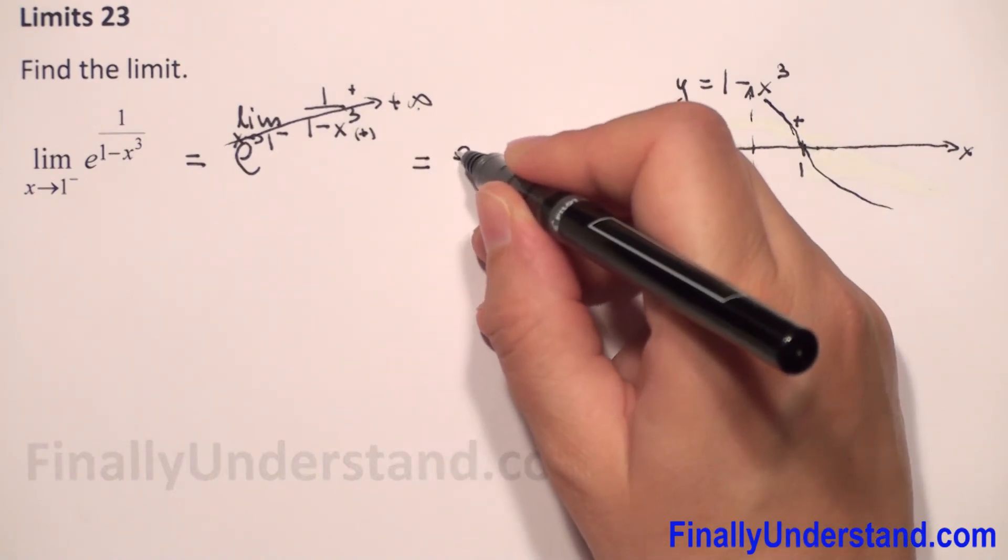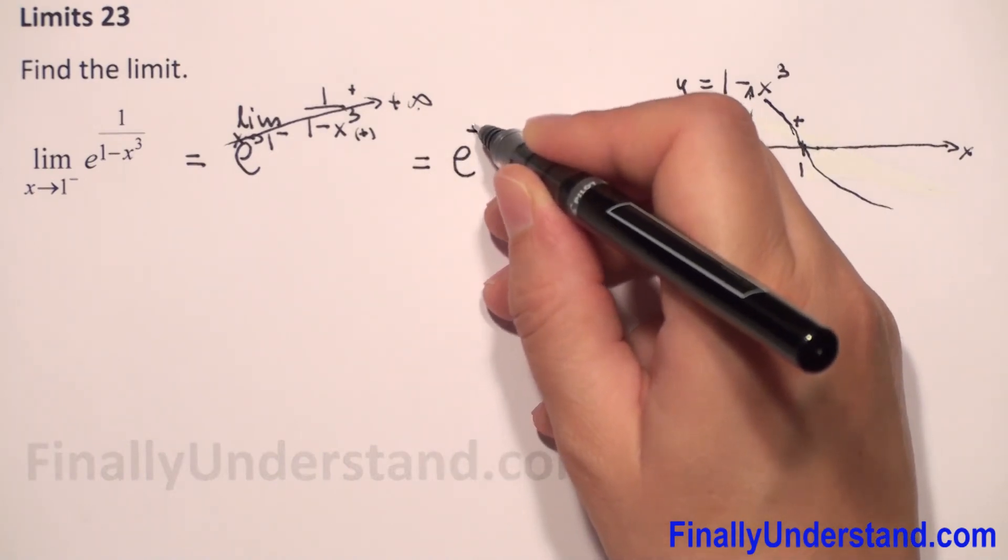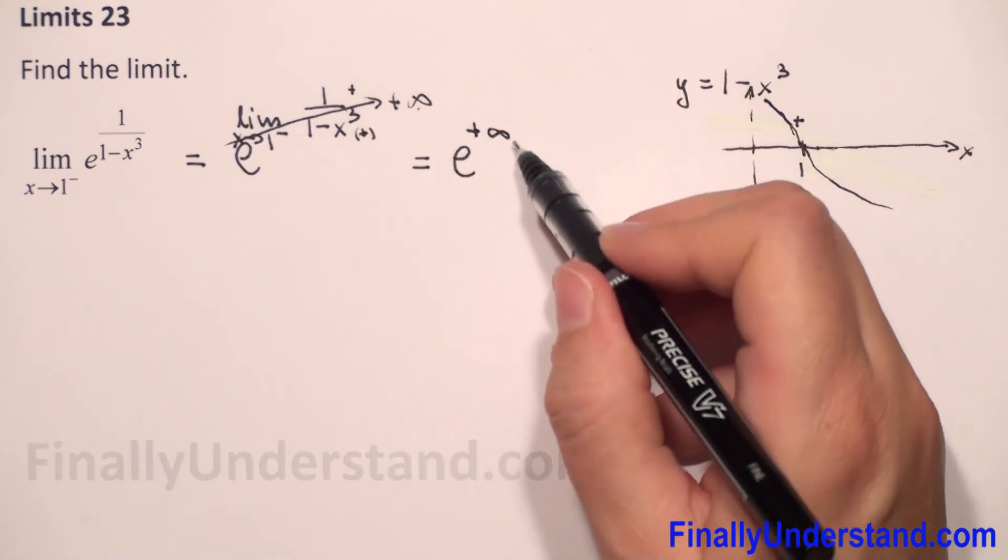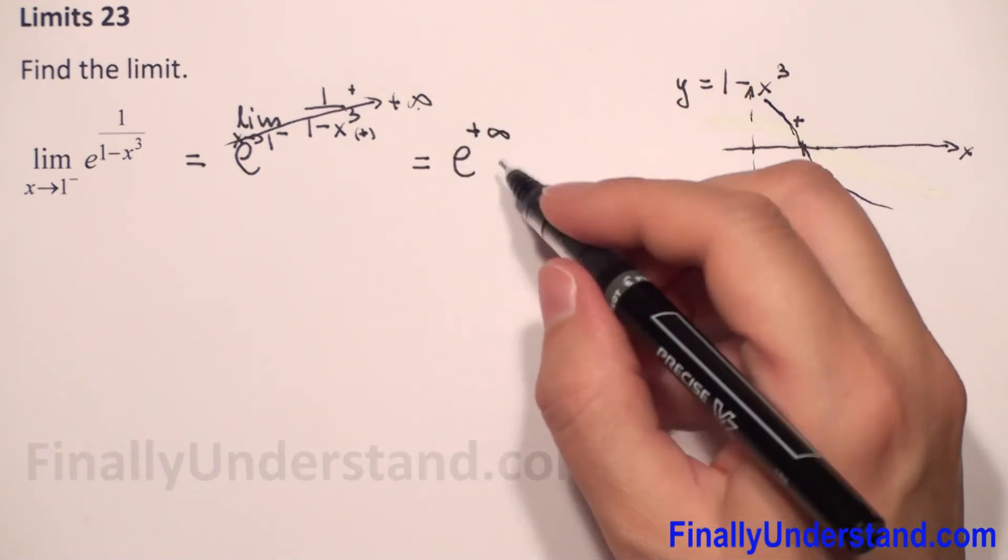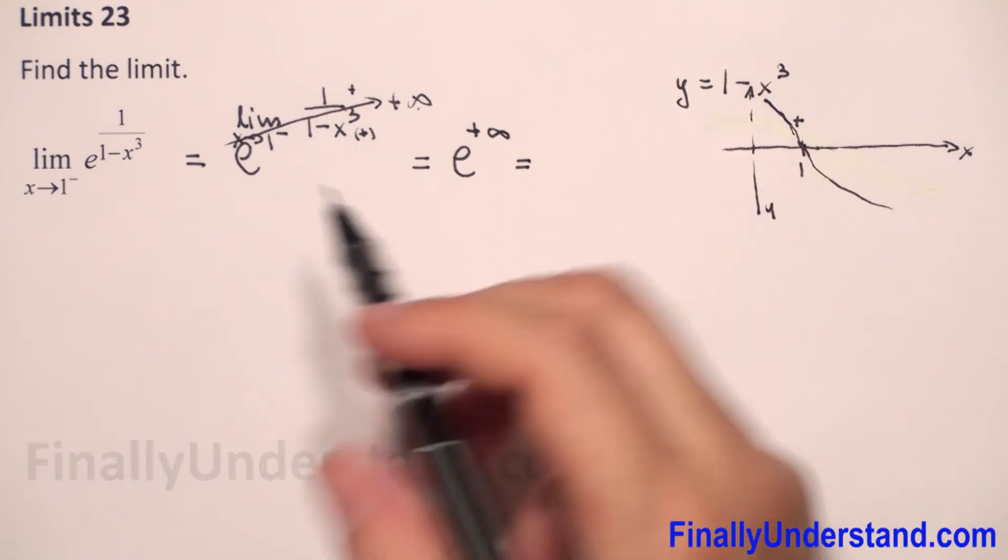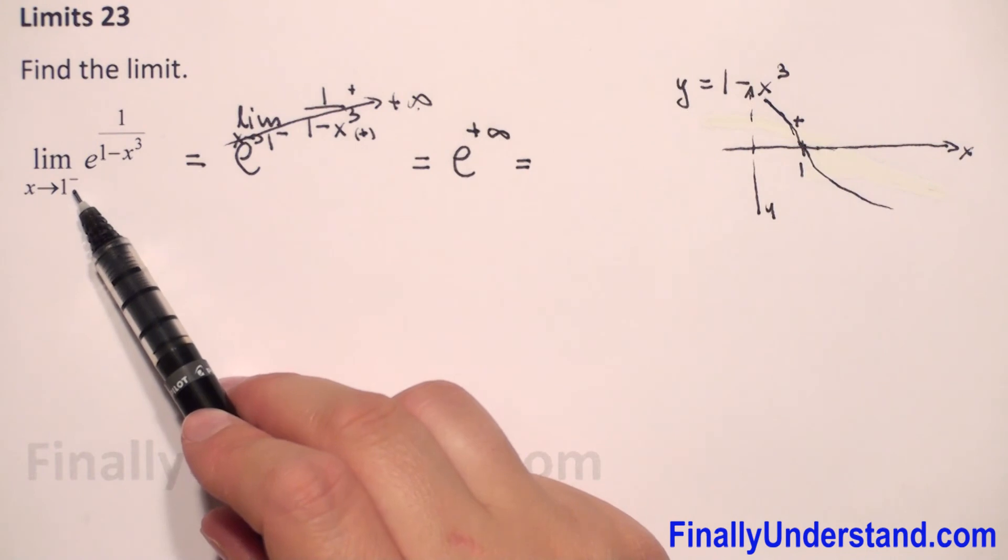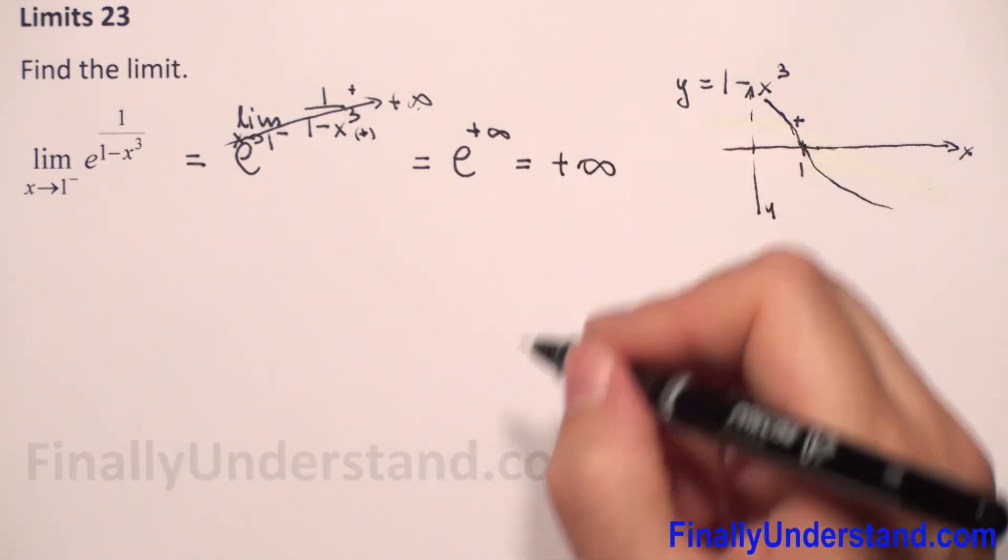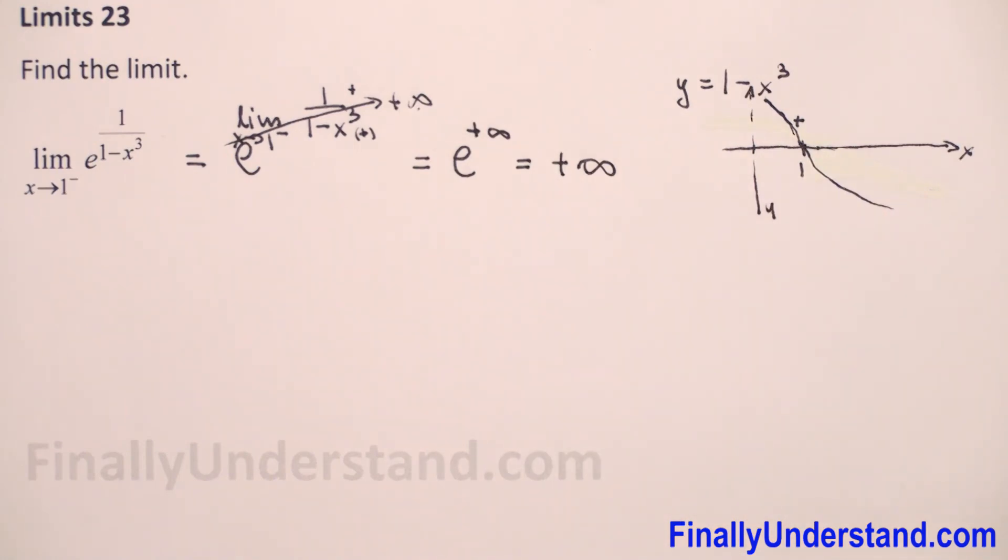This equals e to the power of positive infinity, so this number becomes very, very large and positive. The limit as x approaches one from the left of this expression equals positive infinity. This is my solution.